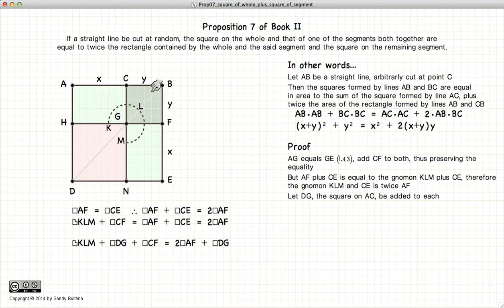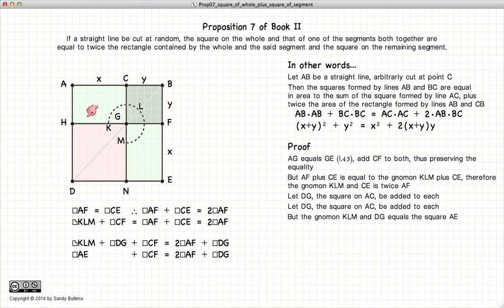So we have AE plus CF equals twice AF plus DG.